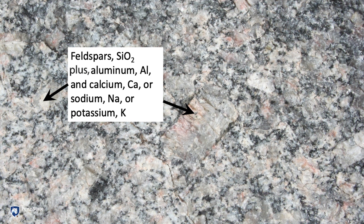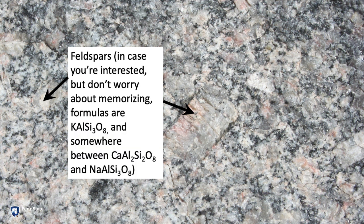Some feldspars have calcium (Ca), sodium (Na), or potassium (K) — you do not need to memorize this. The formulas of the feldspars are KAlSi3O8, and then a range between the calcium one and the sodium one shown on the bottom.